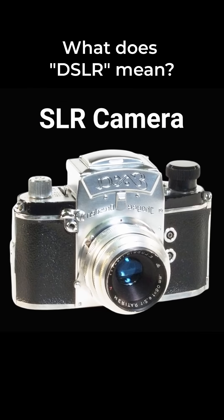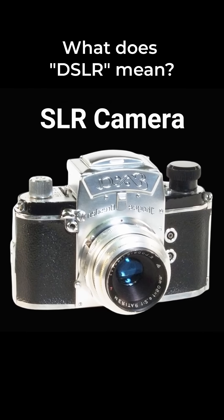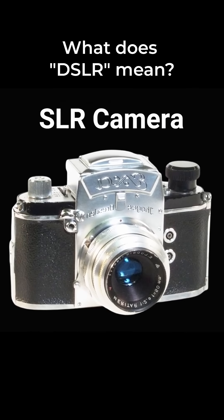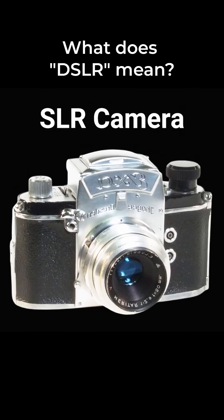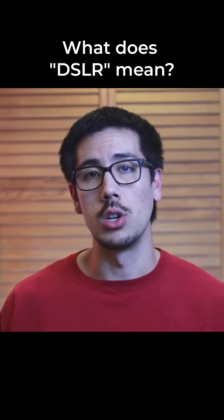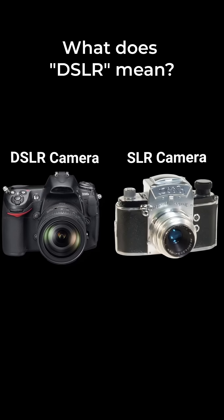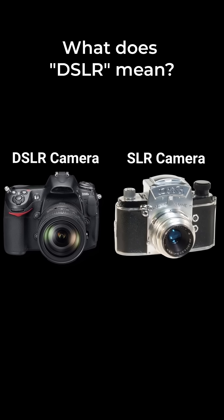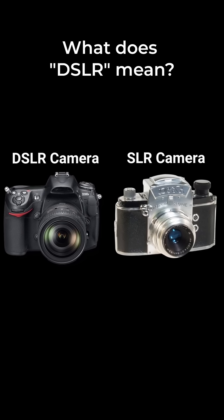Before DSLRs we had film cameras which were termed SLR cameras, standing for single lens reflex. The letter D for digital was added, and these new cameras with digital sensors started being called DSLR cameras.